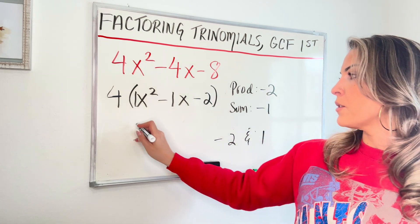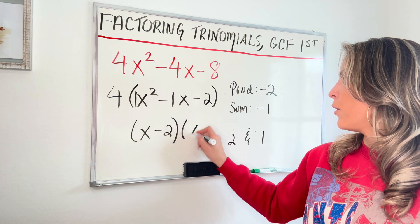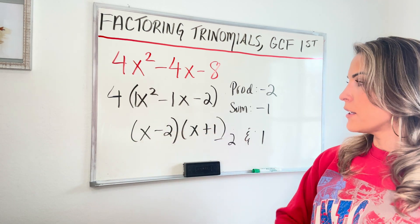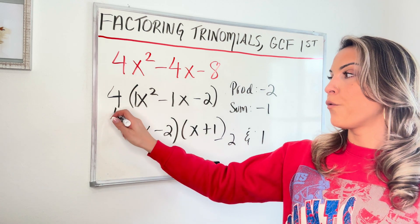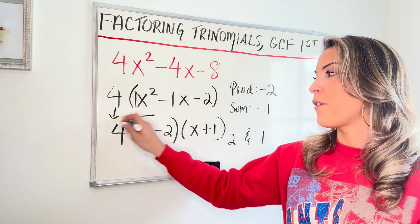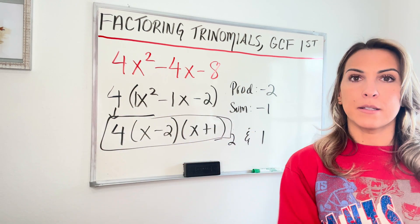Once I found my numbers, I go ahead and set them up in my two binomials, x minus two times x plus one. And I don't forget the GCF that I had factored out before. And there is my answer.